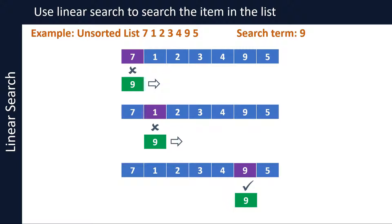If we are to search for 8, which is not in the list, then we will not find the item despite comparing each item in the list with 8. In that case, we will have to report item not found and then exit the algorithm.